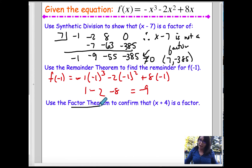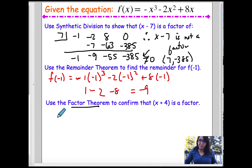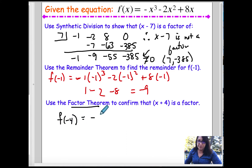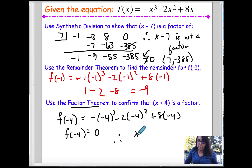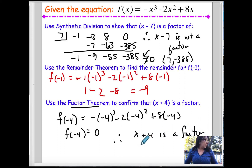This one says to use the factor theorem — very similar to the remainder theorem. Since x plus 4 is a factor, I plug in f(negative 4): that's negative 4 to the third power minus 2 times negative 4 squared plus 8 times negative 4. This does turn out to be 0. Therefore, x plus 4 is a factor of the polynomial.